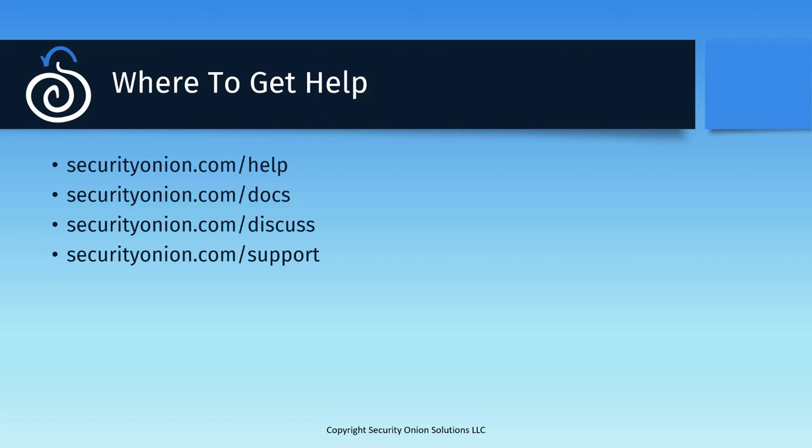Sometimes you may run across a configuration error or problem not covered explicitly in the documentation. In that case, you can start a new thread in our community discussion forum at securityonion.com/discuss. Make sure you read the suggested posting guidelines to verify that you're including all the information community members might need to understand and diagnose your problem. Finally, we do offer paid support through Security Onion Solutions as well, with links to more information on the help page. Paid support is also included if you buy one of our appliances preloaded with the Security Onion software, which may be something to consider if you're deploying in an enterprise environment.